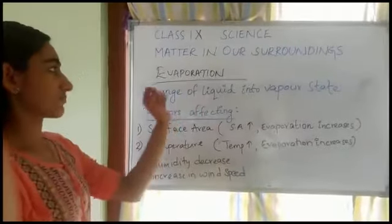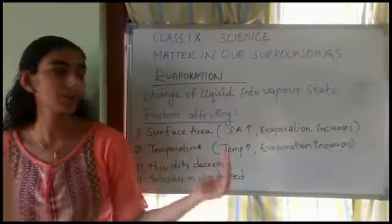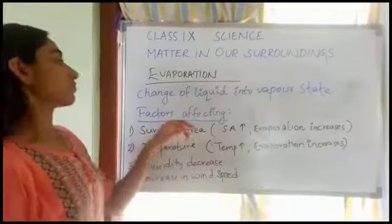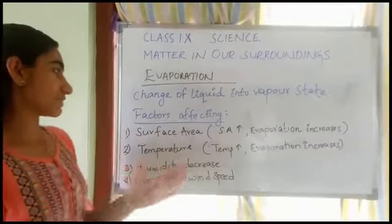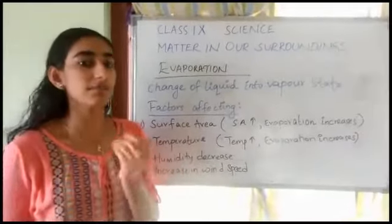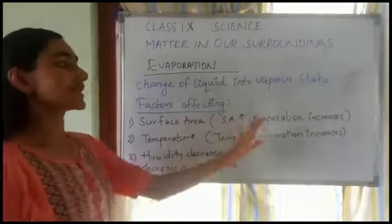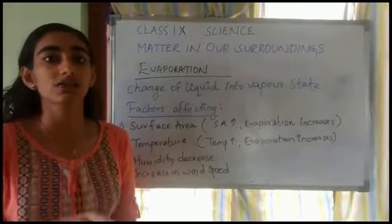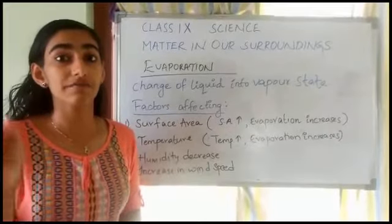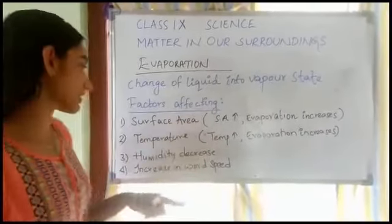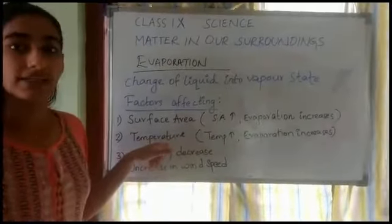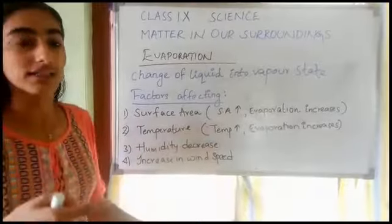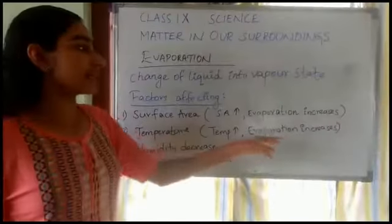The next topic is evaporation. Evaporation is the process of change of liquid state into vapor state. There are many factors affecting evaporation. One factor is surface area — evaporation is known as a surface phenomenon because as the surface area increases the rate of evaporation also increases. For example, when we spread clothes to dry, they dry up faster when spread out. Another factor is temperature: when temperature increases, kinetic energy of the particles increases, so more particles can move to the vapor state, and evaporation increases.